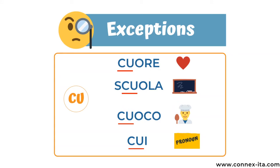As you can see, it's pretty straightforward, but of course there are some exceptions. However, to be fair, there are not many, and here I've listed the most popular ones, which are written with C: cuore — cuore means heart. Scuola — scuola is the school. Cuoco — cuoco means chef. And cui — cui is an Italian pronoun that I'm going to cover in one of my next lessons. So these words are all written with the letter C, even if the U is followed by a vowel.